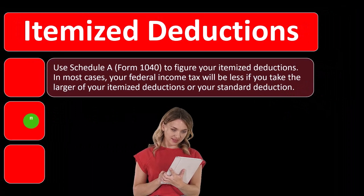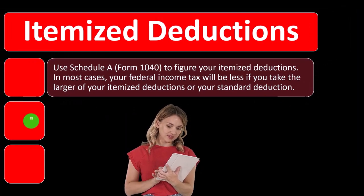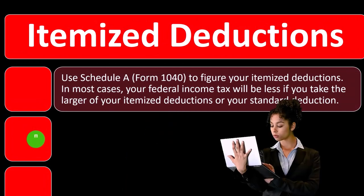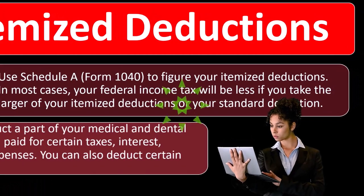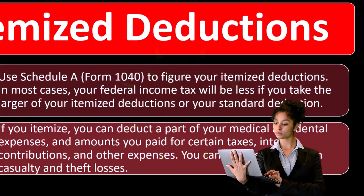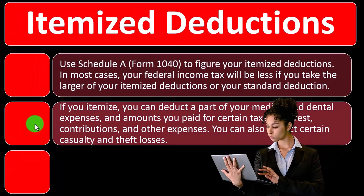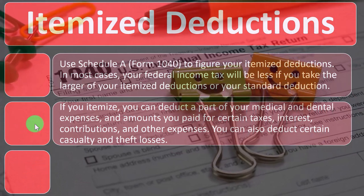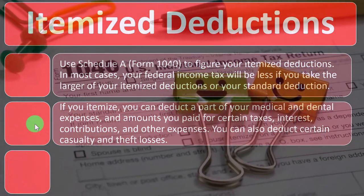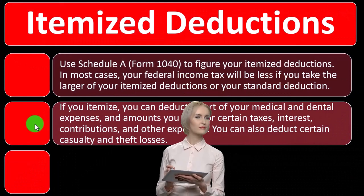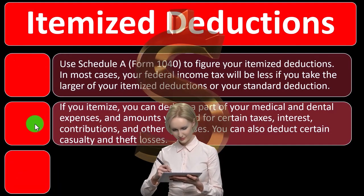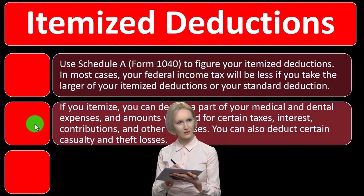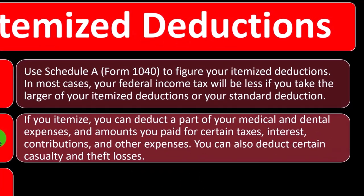Use Schedule A, Form 1040, to figure your itemized deductions. In most cases your federal income tax will be less if you take the larger of your itemized or standard deduction. Tax software is useful for these calculations to determine the best tax benefit. If you're nowhere near the itemized deduction threshold, it may not be worth compiling all the related data.